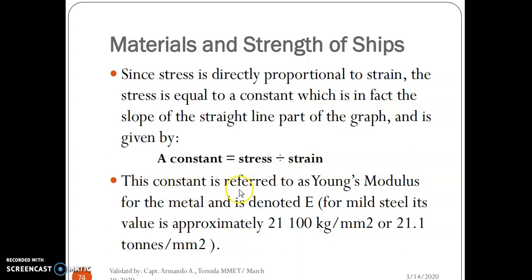This constant is referred to as Young's Modulus for the metal and is denoted E. For mild steel, its value is approximately 21,100 kilogram per millimeter square, or 21.1 tons per millimeter square. This is converted from kilogram to tons.